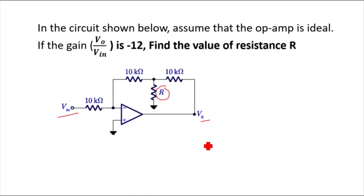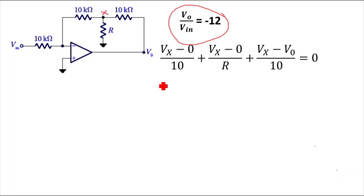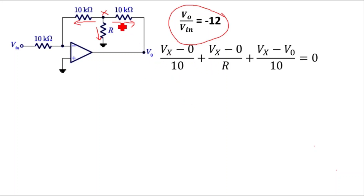V_out by V_in is equals to minus 12 — this value is already given in the numerical. Now we will start finding the equations. Consider this is node X. As I already told you in my previous video, nodal analysis is the best approach, so I will again use nodal analysis here. I will consider that all currents are outgoing for all branches at node X.